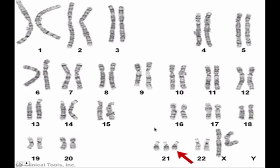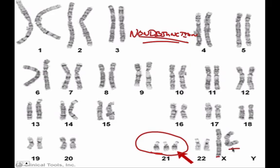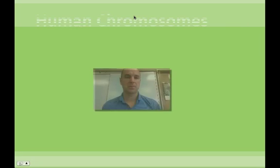This next one is Down syndrome — probably the most classic case. If they were going to ask you a question on the EOC, they would ask you about Down syndrome. It's caused by non-disjunction — when chromosomes don't split properly, any time you see too many chromosomes. This person has three number 21 chromosomes, and it is a girl. Down syndrome is sometimes called trisomy 21, because they have three number 21 chromosomes.